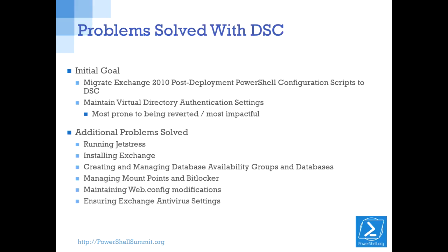Once DSC came out, I knew that was a much better solution because not only could we set our configuration, but we could put our DSC local configuration manager in apply and autocorrect mode, and we'd be able to detect and correct configuration drift. Starting out, we didn't actually intend to do the entire deployment and configuration with DSC — we just wanted to manage some key settings. Specifically, we wanted to configure Exchange Virtual Directory settings, which are the majority of what the clients connect to. If you have an authentication setting revert, your Outlook clients start getting credential prompts or clients can't connect, and you start getting help desk calls.